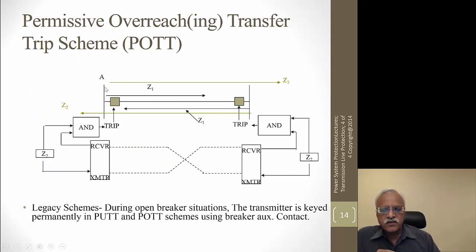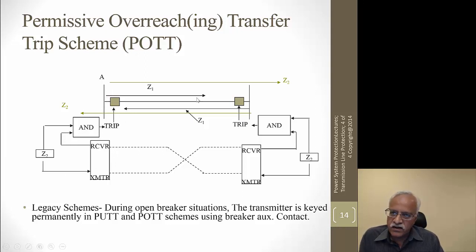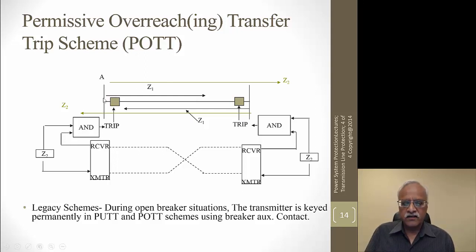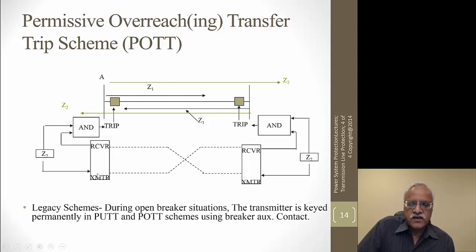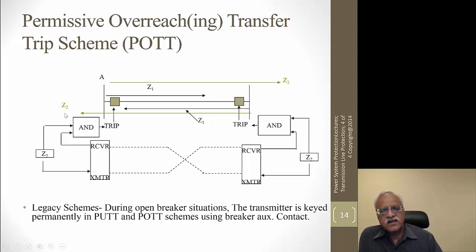Another scheme uses an overreaching zone instead of zone 1 to key the transmitter. Instead of keying with zone 1, zone 2 is used to key the transmitter. Zone 1 can still be used to trip directly without depending on the pilot communication. If there is a fault in 85% to 100% of the line section, zone 2 picks up and keys the transmitter. If a signal is received from the remote end, it trips without time delay. The only difference between this and permissive underreach is that the overreaching element — zone 2 — keys the transmitter instead of zone 1.